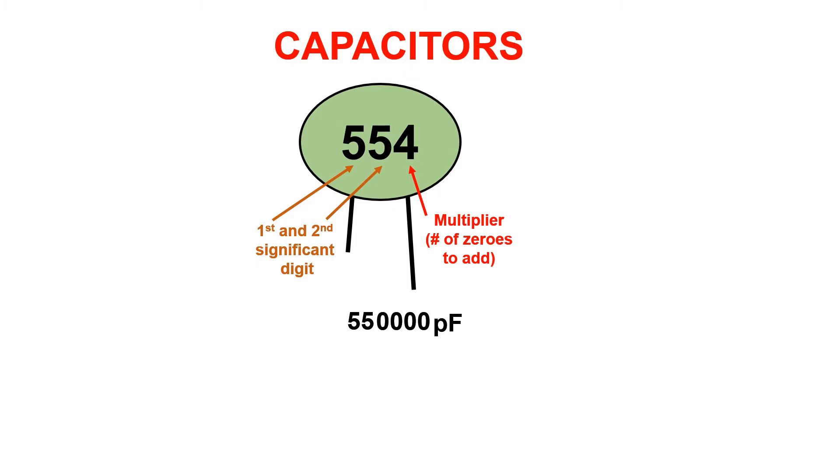If we plug the value into a calculator it will look something like this. 550,000 pico equals, and we should get a value of 550 nano on our screen. Remember the unit of measure for a capacitor is the farad.